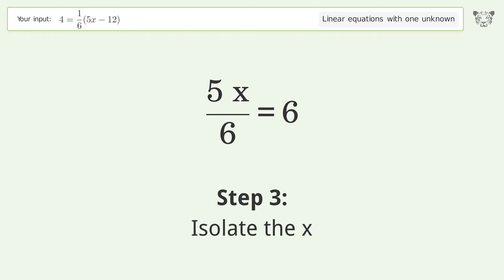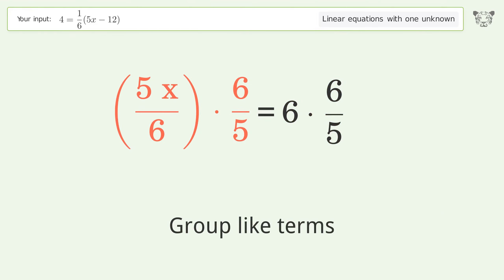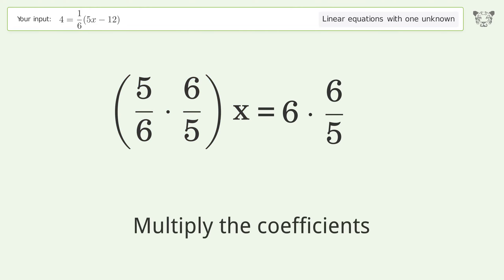Isolate the x. Multiply both sides by the inverse fraction 6 over 5. Group like terms. Multiply the coefficients.